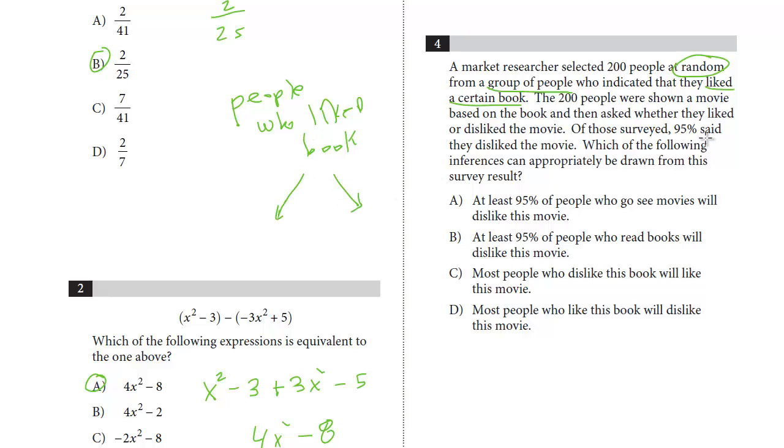And of these people, 95 of the survey said they disliked the movie and that means only 5% liked it. And so before you look at these choices, you have to recognize the only conclusion you can ever draw is about these people, people who liked the book. Any other conclusion about a group that's not included in the sample is incorrect. So let's take a look at the choices.